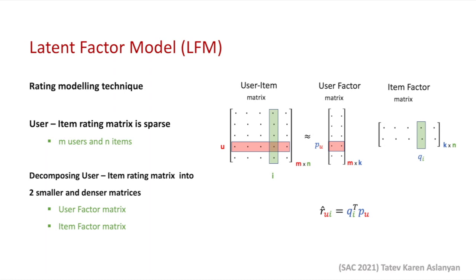LFM is a rating modeling technique that uses dimensionality reduction to predict and fill in the missing ratings in the user item rating matrix. This matrix is usually very sparse with large amount of missing ratings. The rows of this matrix represent the users and the columns represent the items. The goal of the LFM is to rotate the axis of this large and sparse matrix so that the pairwise correlations between the dimensions can be removed and it can be decomposed into two smaller and denser matrices with the same rank.